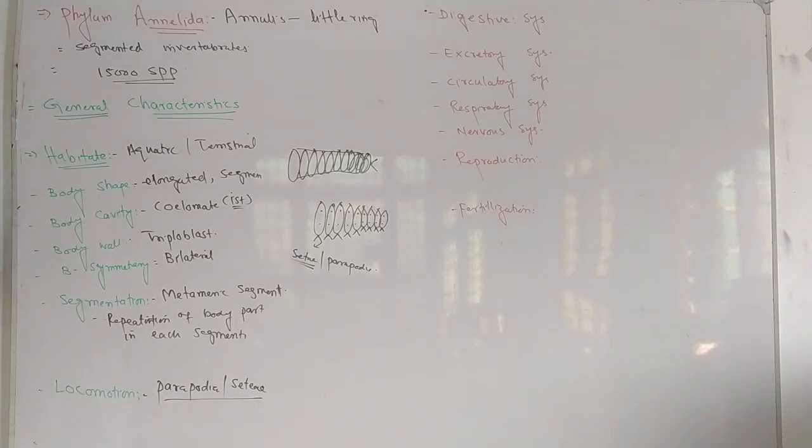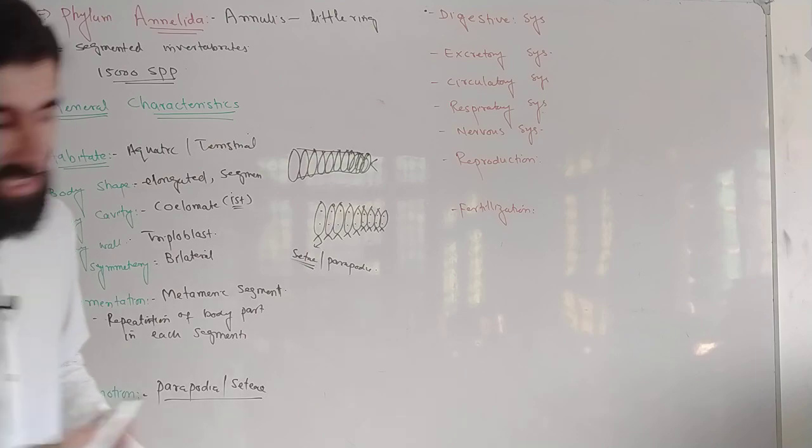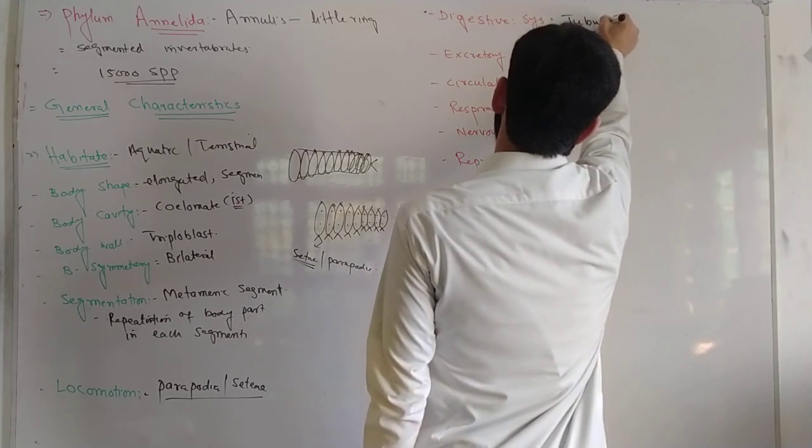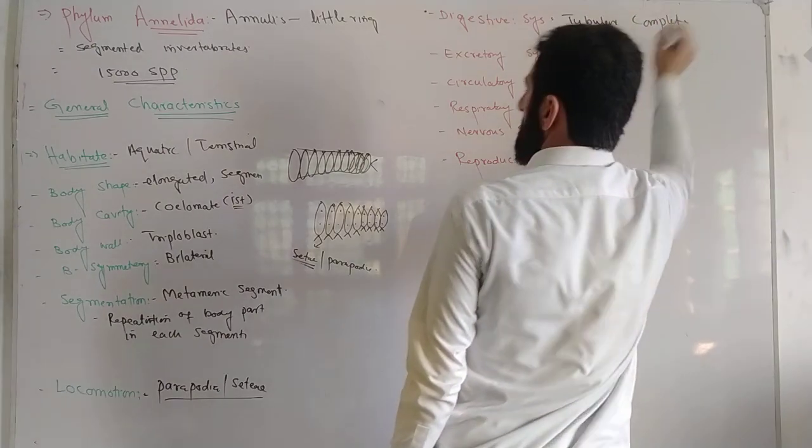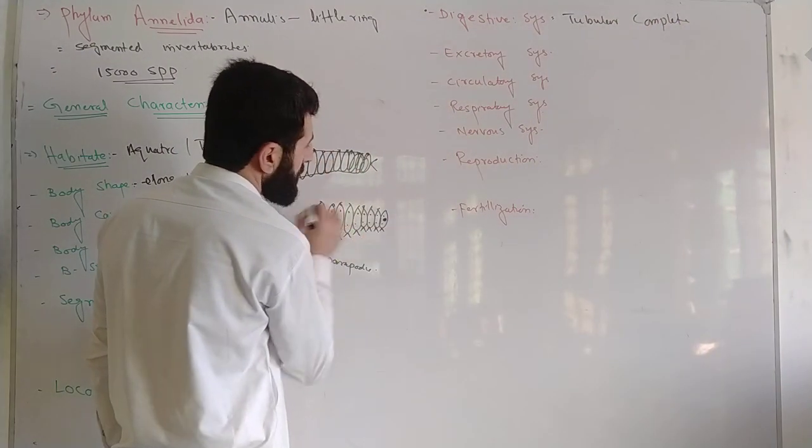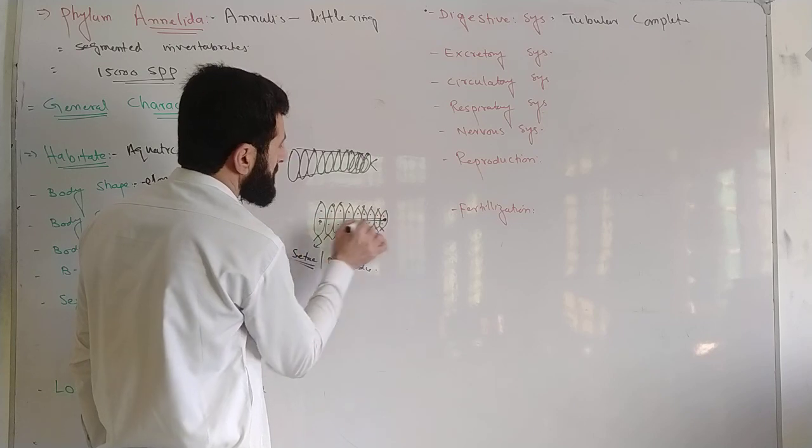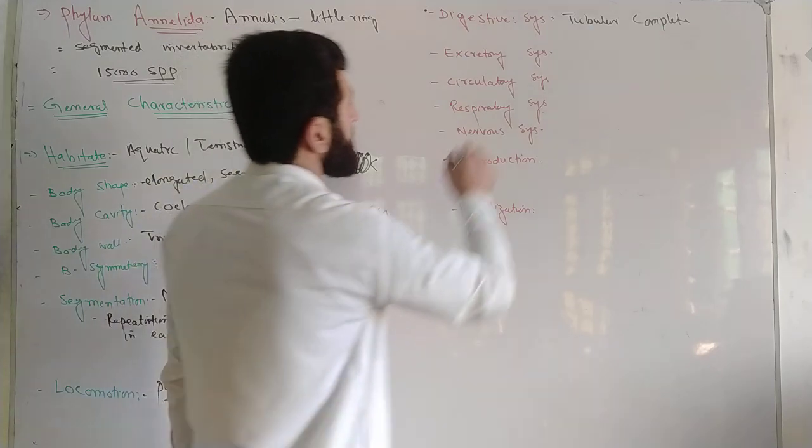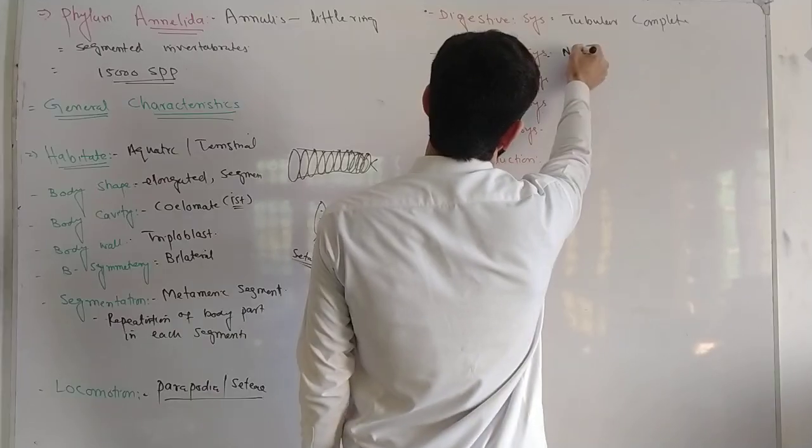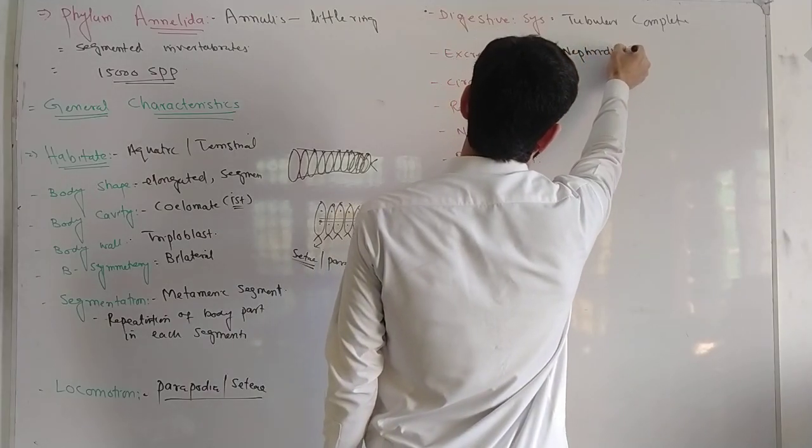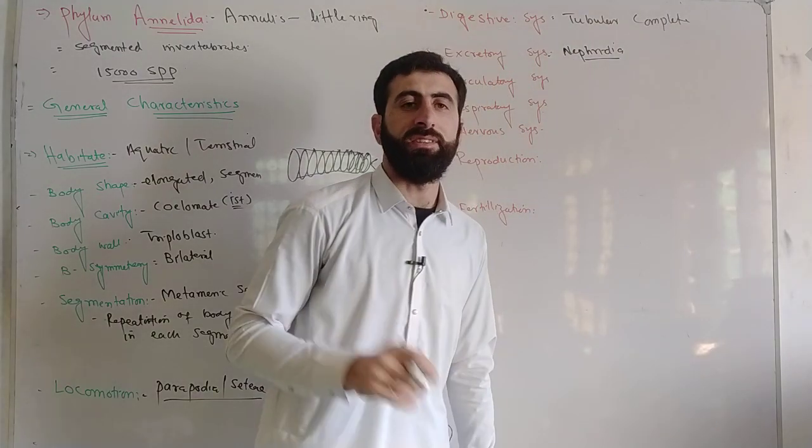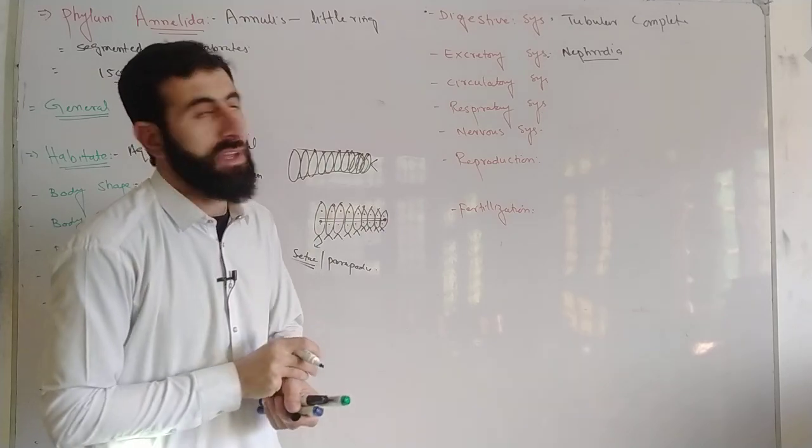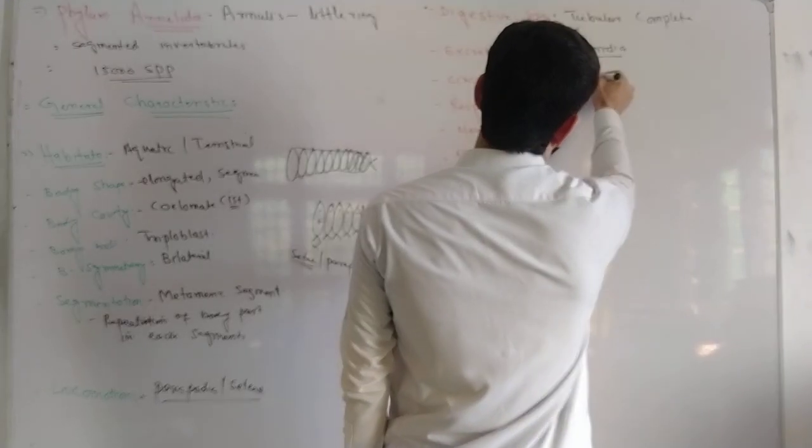Digestive system is tubular and complete. Tube-like digestive system with mouth is present in these organisms. Excretory system—for excretion they contain nephridia, and nephridia are present in each segment. Each segment has nephridia repeated. They have closed-type circulatory system.